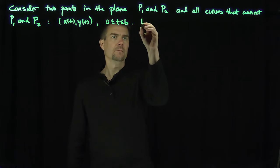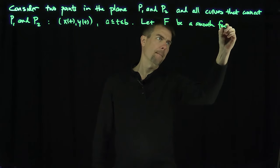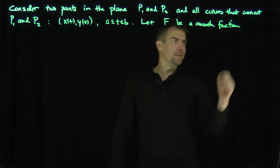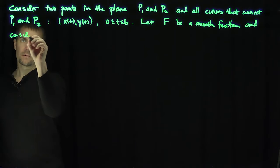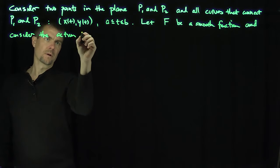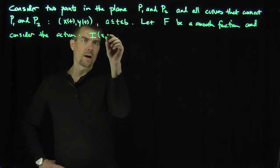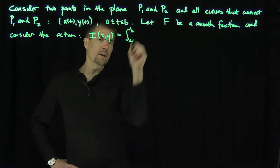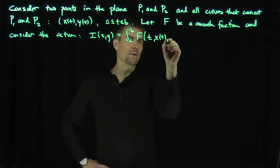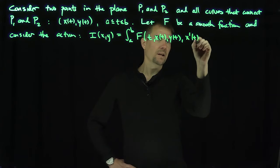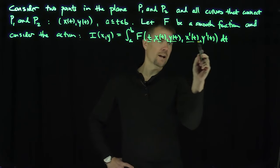What I want to do is let f be a smooth function — technically we just need two continuous derivatives — of five variables. Our goal is to consider the action. The action is this expression I, a functional that depends on the curves x and y. It's going to be the integral from a to b of f of t, x(t), y(t), x'(t), and y'(t) dt. So f is a function of five variables: it depends on time, position, and velocity.